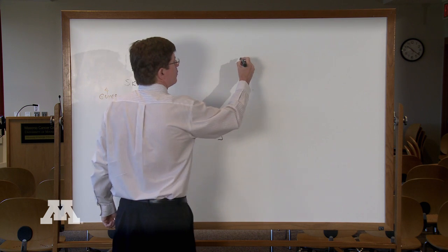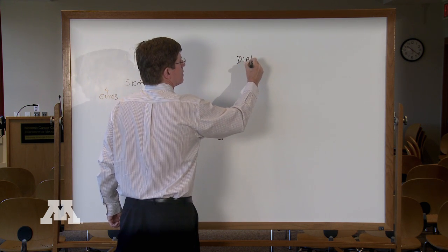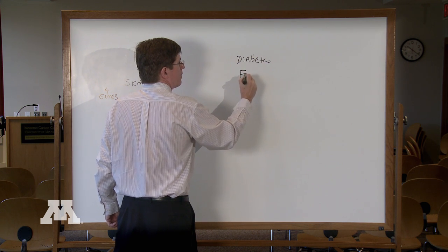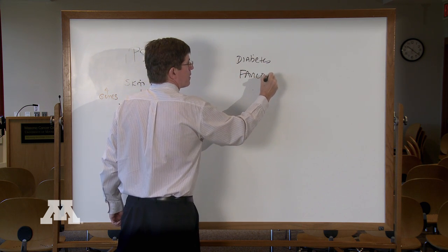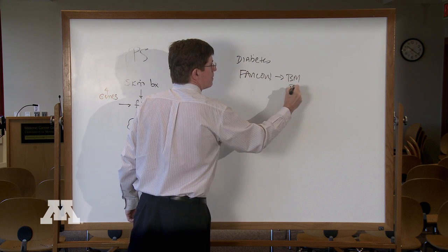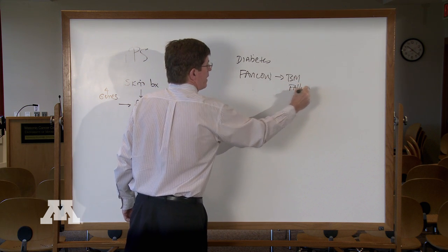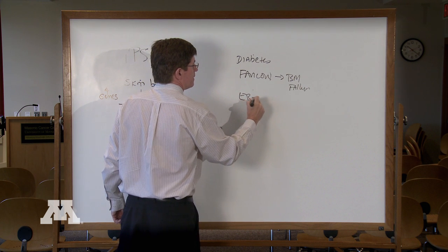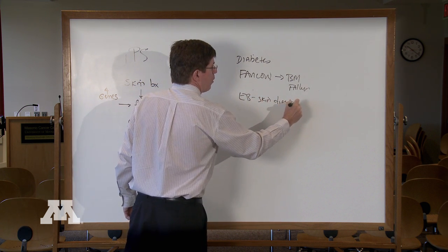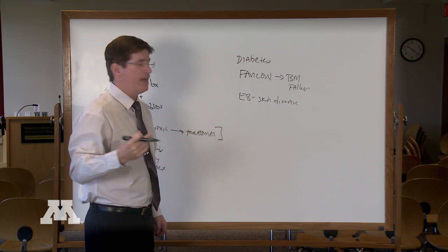So, for example, if you have diabetes, or if you have a genetic disease called Fanconi anemia, which is a defect that causes bone marrow failure, or you have EB, the skin disease, which is all—these are all due to some type of genetic defect.